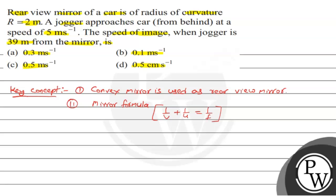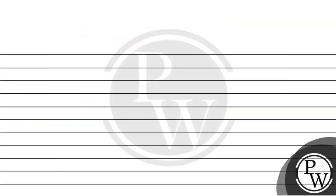Using these two key concepts, we solve the question. According to the mirror formula, 1/V + 1/U = 1/F. Rearranging, 1/V = 1/F minus 1/U. Taking LCM, V is equal to F into U divided by U minus F.